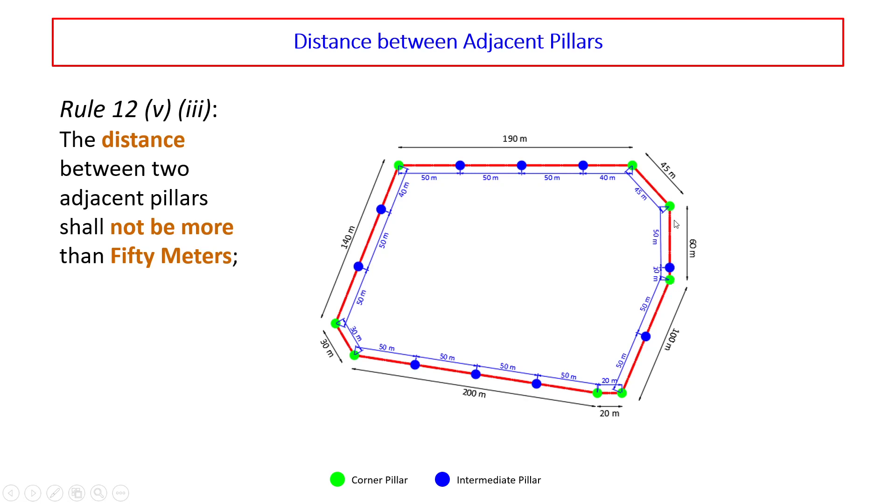Then, distance between these two corner pillars is 60 meter. So, we place an intermediate pillar here after 50 meters and this distance is 10 meter. Then, distance between these two corner pillars is 100 meter. So, we place an intermediate pillar after 50 meter and this distance is 50 meter and so on.